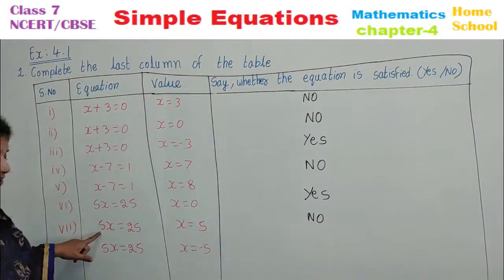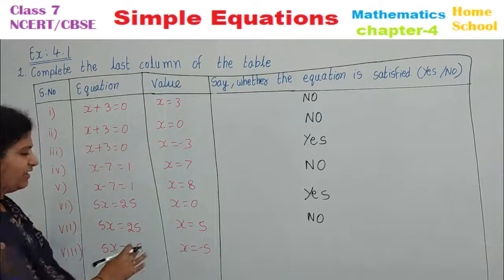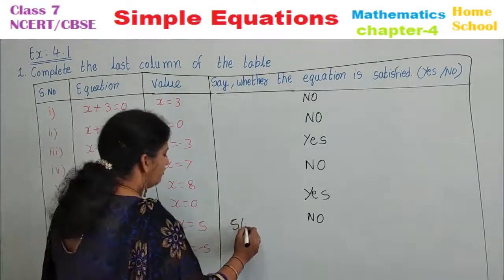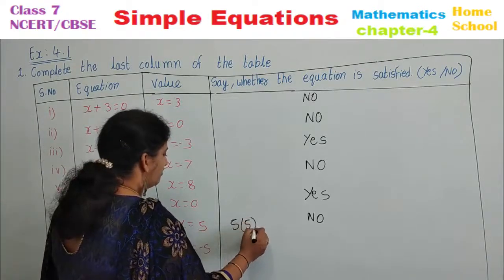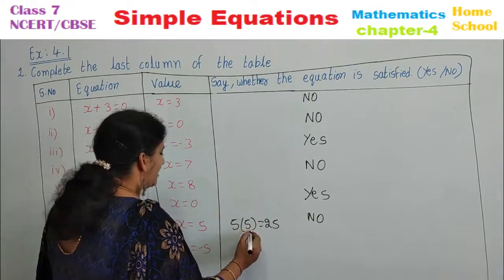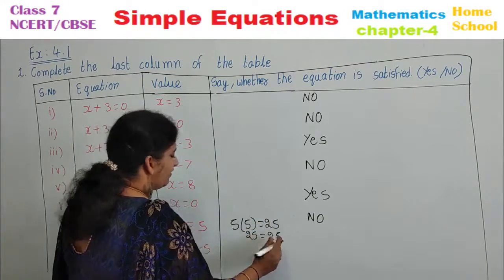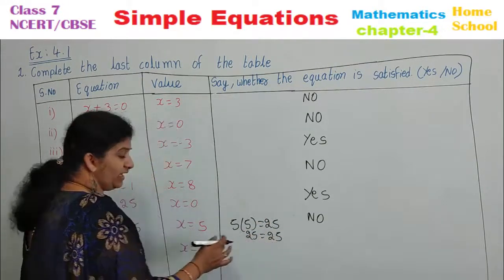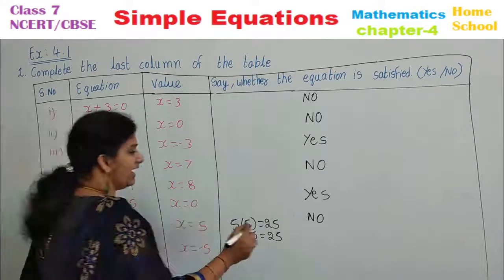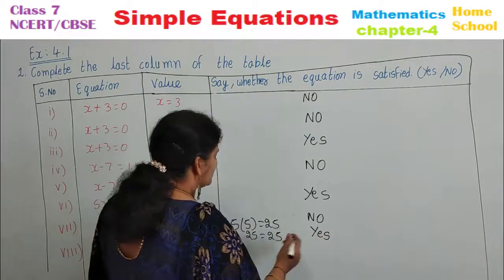Seventh one: 5x equals 25, with x equal to 5. Substitute: 5 times 5 equals 25, and 25 equals 25. Both are equal — left-hand side equals right-hand side. Yes, it is satisfied.